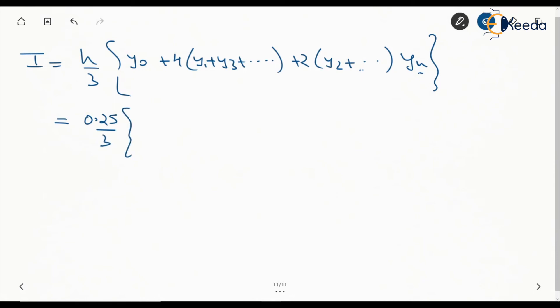y₀ which is 1, plus 4 times—we will have only y₁ and y₃ in this case—so it will be y₁ which is 0.800 and y₃ is 0.5714.